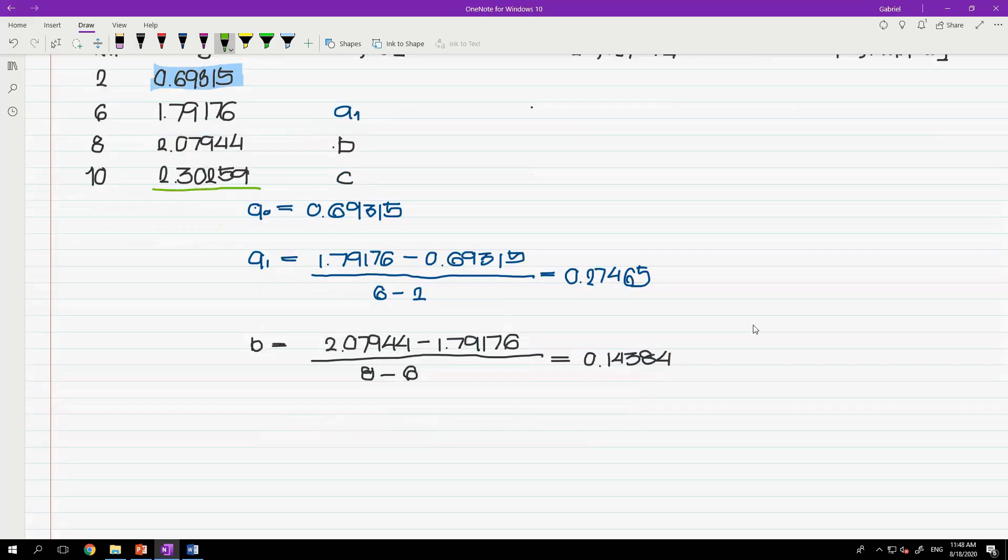The same pattern will apply for variable c. So c is equals to 2.30259 minus 2.07944, all over 10 minus 8. And that is equals to 0.11157.